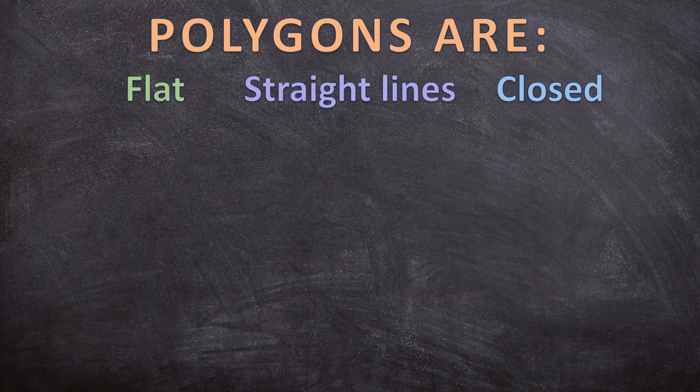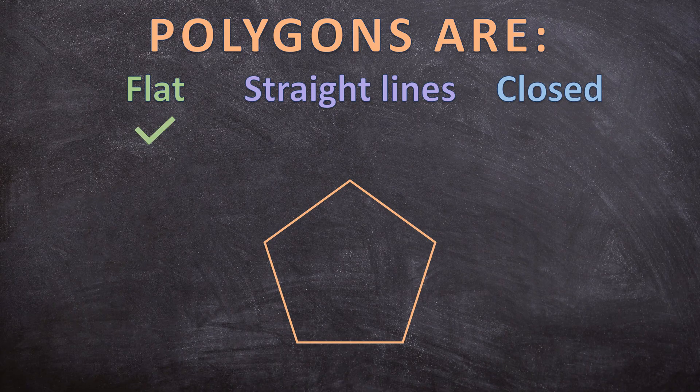Let's look at the first shape and answer these three questions. Is this pentagon flat? Yes, it's flat. Does it only consist out of straight lines? Yes. Is it a closed shape? It is a closed shape. So this is a polygon.